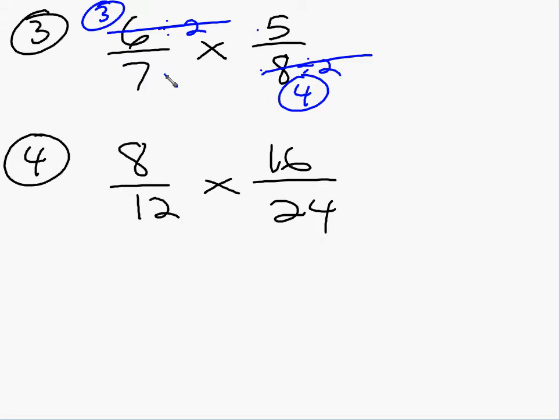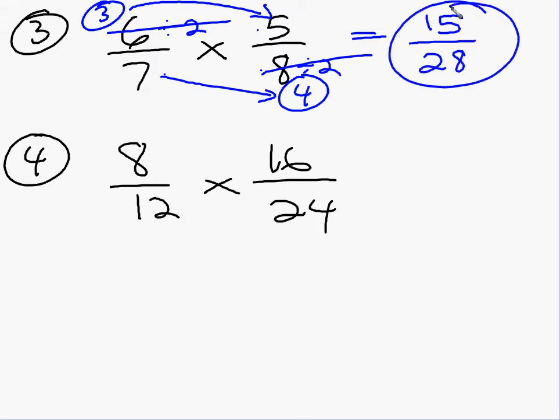So now I am ready to multiply across with what I have left. 3 times 5 is 15. 7 times 4 is 28. So your answer should have been 15 28ths.